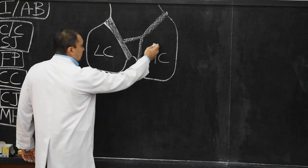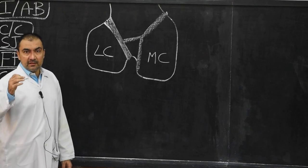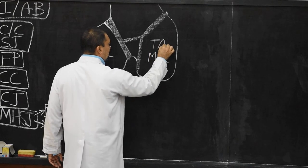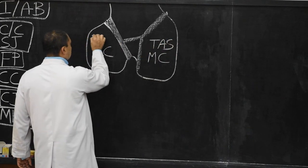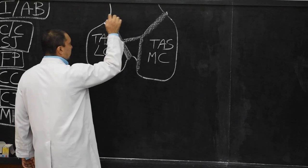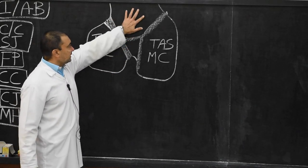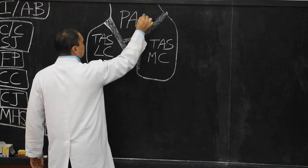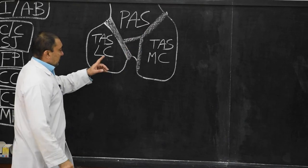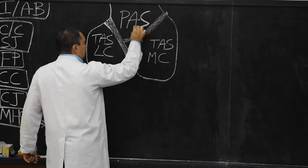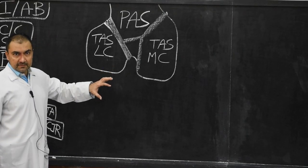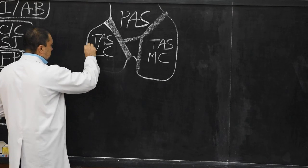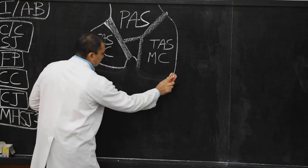Similarly, these surfaces are known as the tibial articular surface. The surface located here is the patellar articular surface. This diagram is drawn in a flexed condition — remember this is the knee joint in flexed condition, there is flexion of the knee joint.